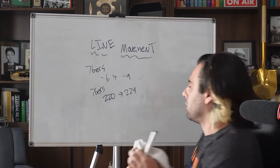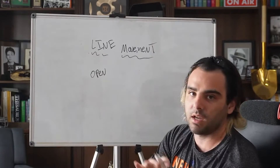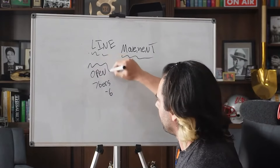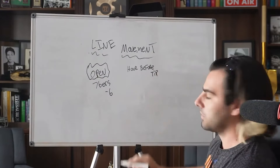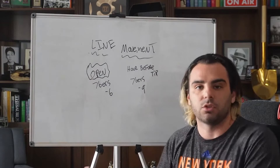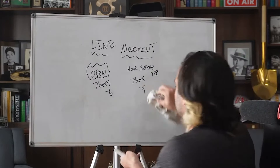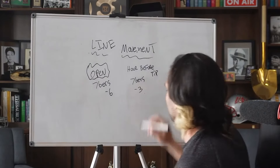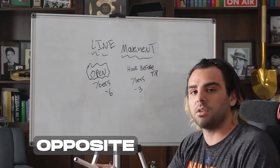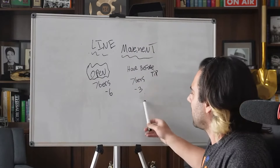You always want to look at the opening line and compare it to where it sits about an hour before game time. The opening line is what's set at the start of the day — sometimes the night prior. If the 76ers opened at minus six and an hour before tip it's minus nine, that means money is being bet on that side, driving the number up. Line movement works both ways — favorite and underdog.